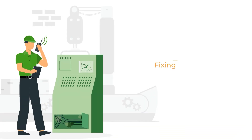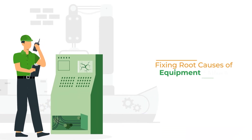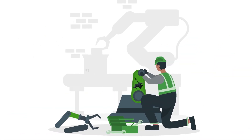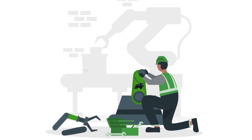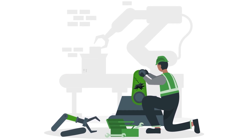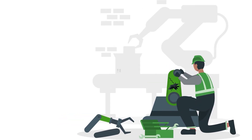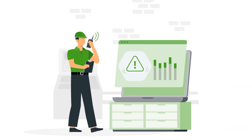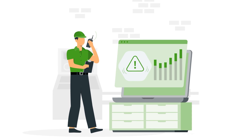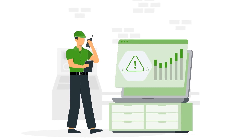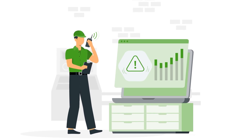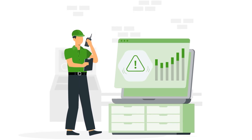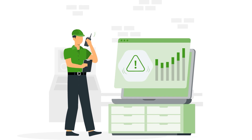Fixing root causes of equipment failure. When a machine breaks down, it's often a sign of bigger problems. Failure analysis helps discover the deeper issues causing equipment failures so they can be resolved and operations can resume.